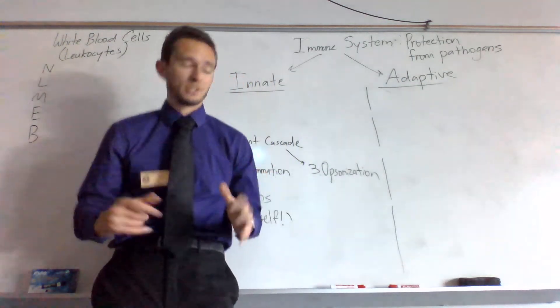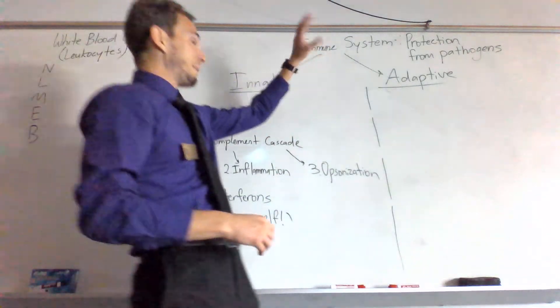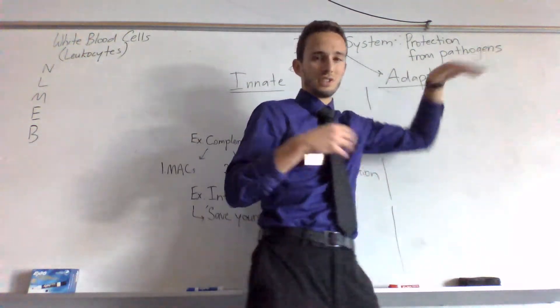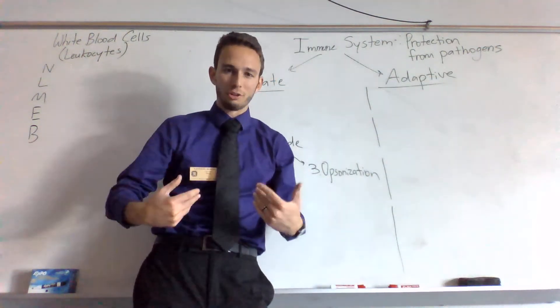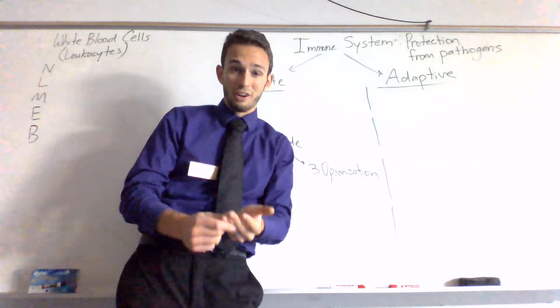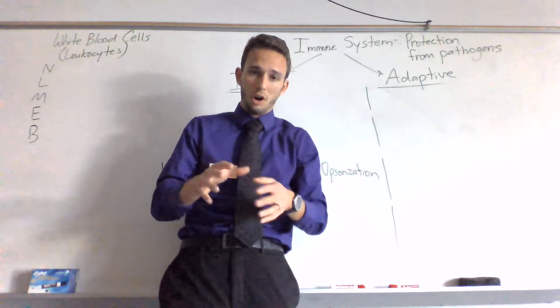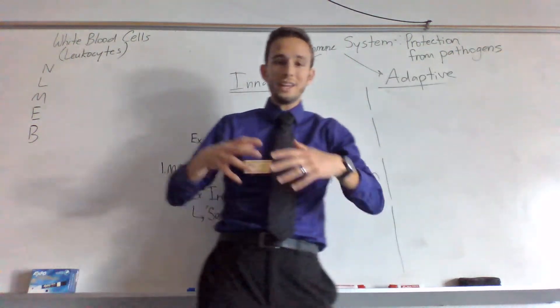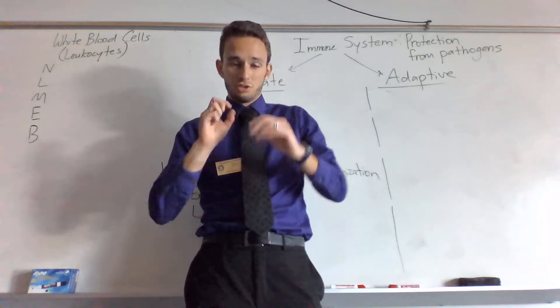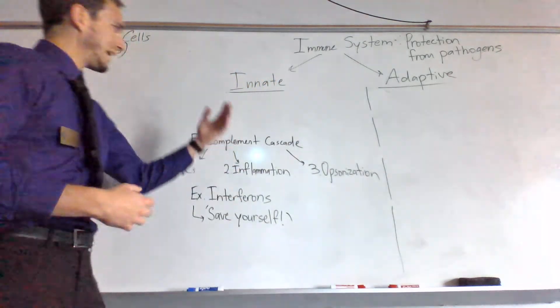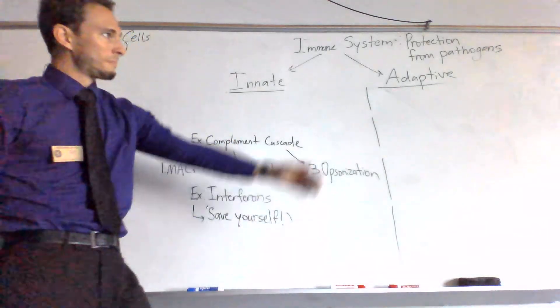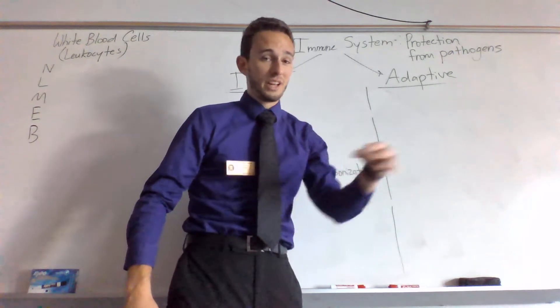So immune system, what is it? Well, first off, by definition, it's just your body's protection from pathogens, which are disease causing agents or microorganisms. Things like bacteria, protozoans, viruses, parasites, anything that could cause you harm or get you sick. So the way we do it is through two main responses. We have an innate response, which will be our first and second lines of defense, and our adaptive, which is the third line of defense.